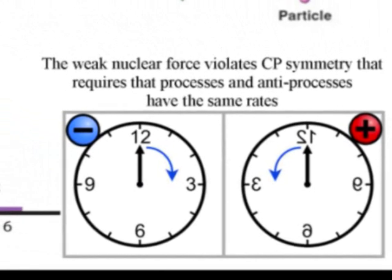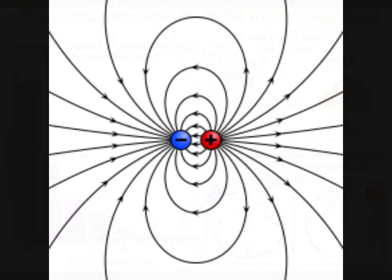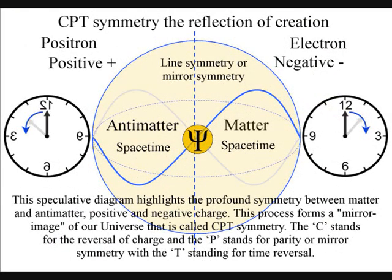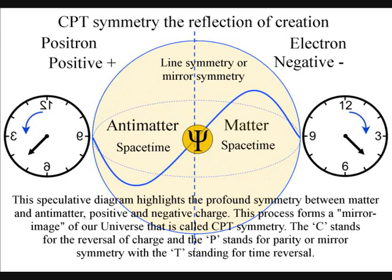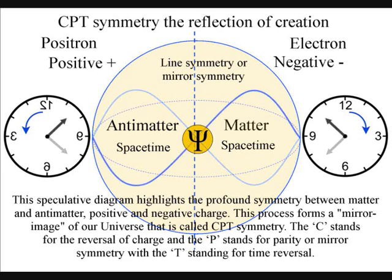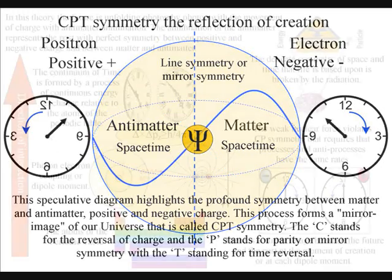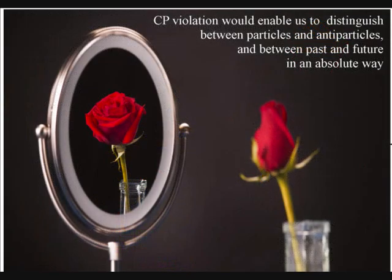In this theory, the future is unfolding with the movement of charge, with matter-antimatter annihilation representing a fundamental part of the process. The annihilation of the antimatter represents the past, with perfect symmetry between positive and negative charge and between matter and antimatter. It is this symmetry, represented by CP symmetry, that is broken by the radiation or radioactive decay of the weak force or interaction. We could say that there is a mirror image between the future and the past at the moment of creation, or at each dipole moment.